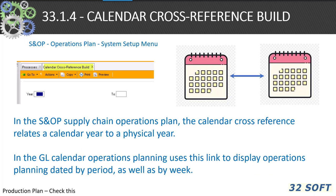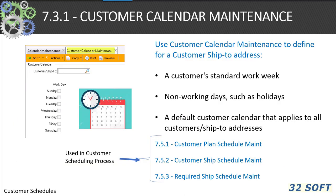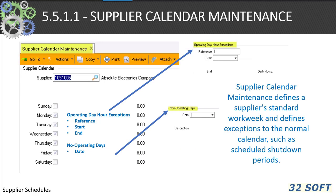In 33.1.4 sales and operations planning, there is a calendar cross-reference build function that links the calendar year to corresponding physical periods in the general ledger calendar. Operations planning uses these links to display data by period as well as by week. The 7.3.1 customer calendar maintenance defines a customer's standard work week and non-working days such as holidays. It is used as a default customer calendar that applies to the customer ship-to address.